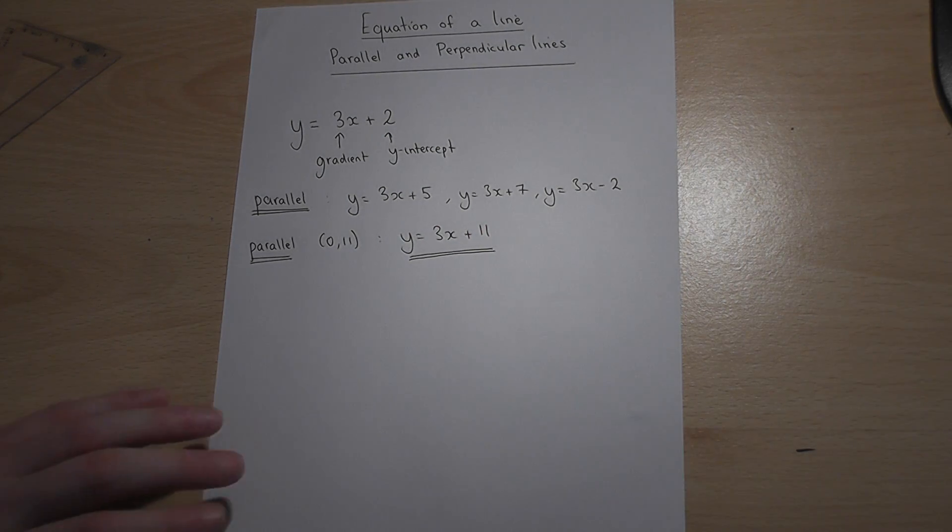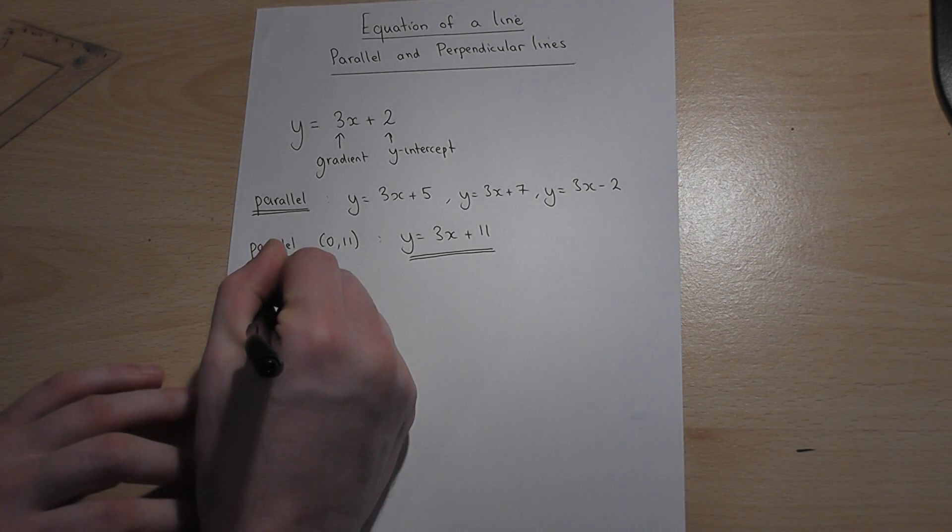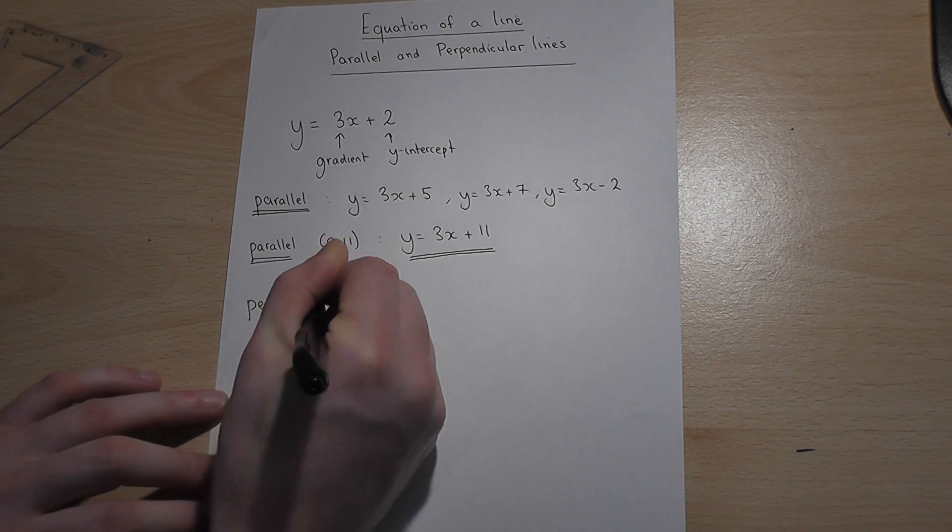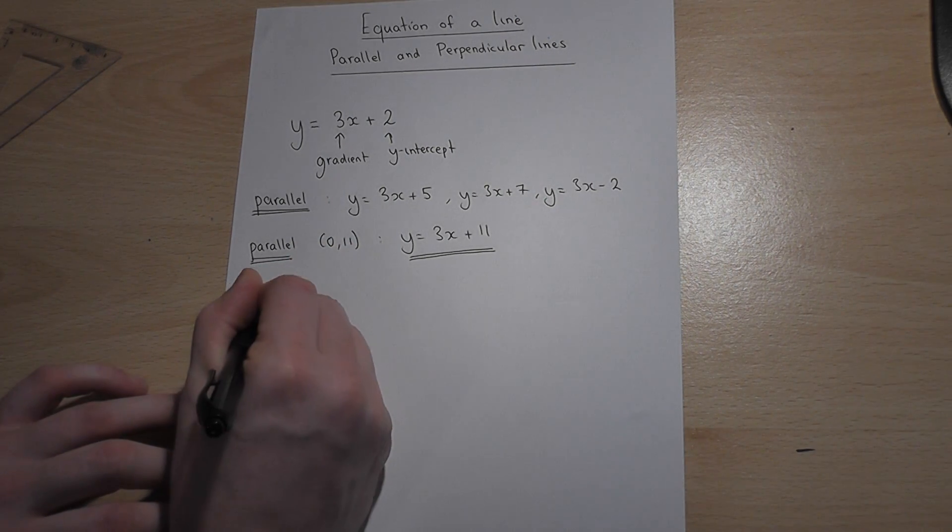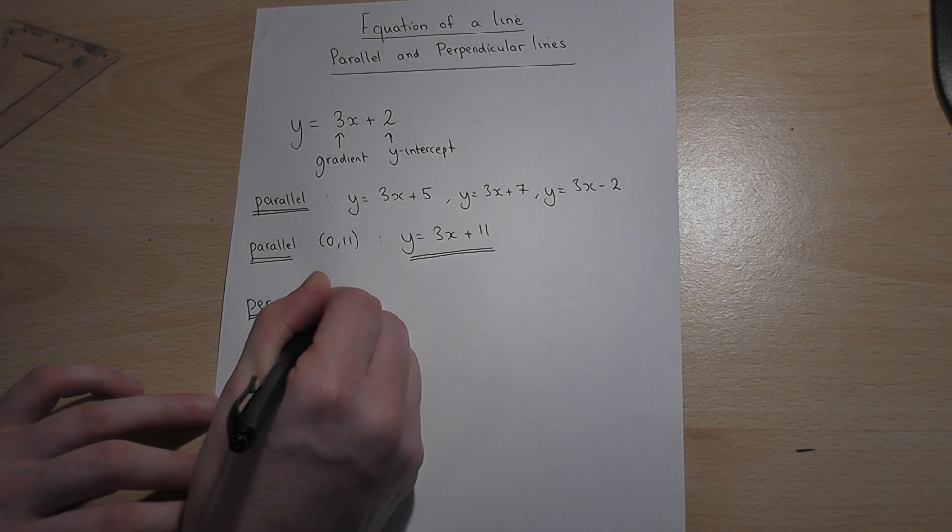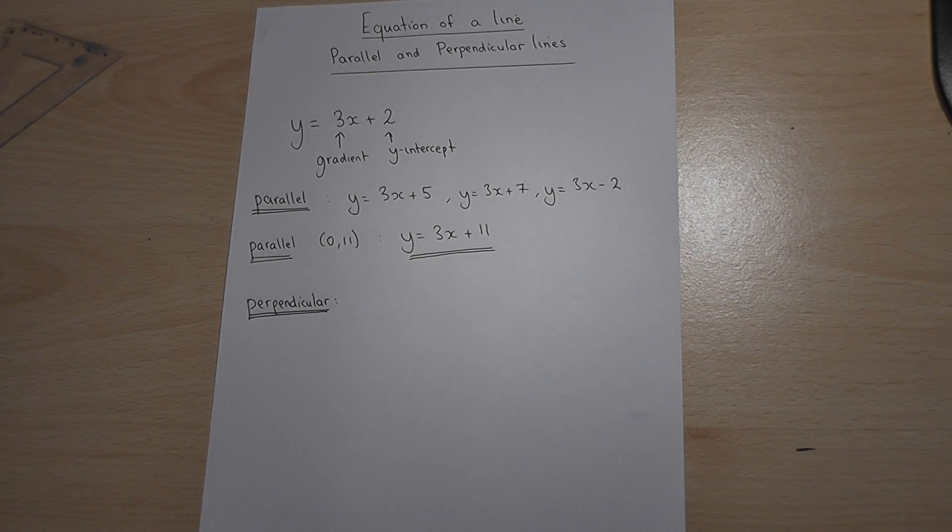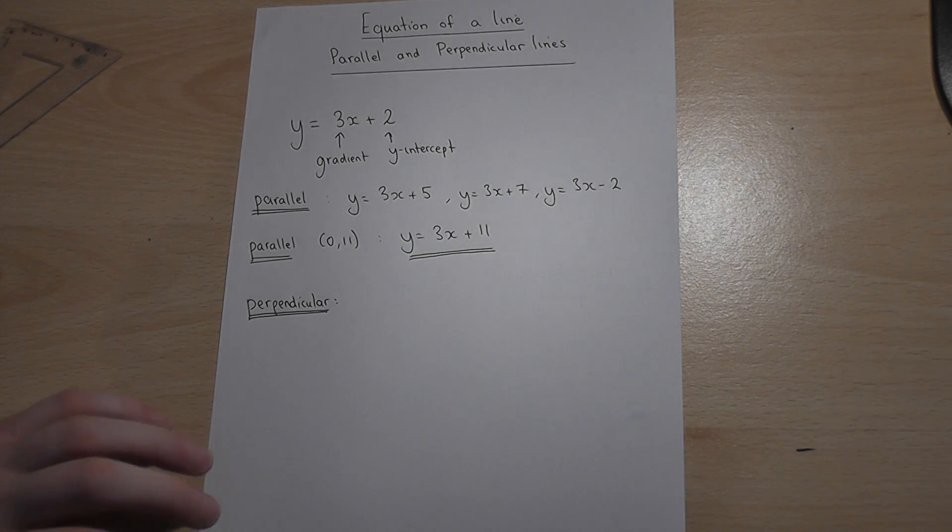Now another word which you can also meet is perpendicular. Perpendicular just means at right angles, and there's a very simple way to find the new gradient of a perpendicular line, and it uses the word reciprocal.